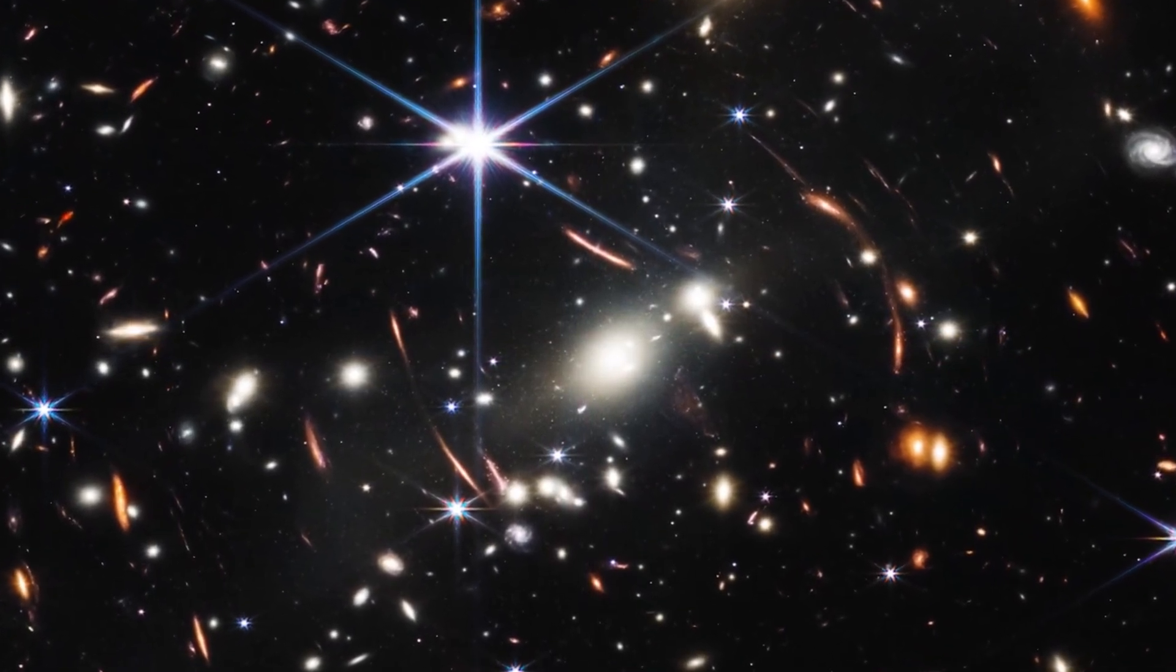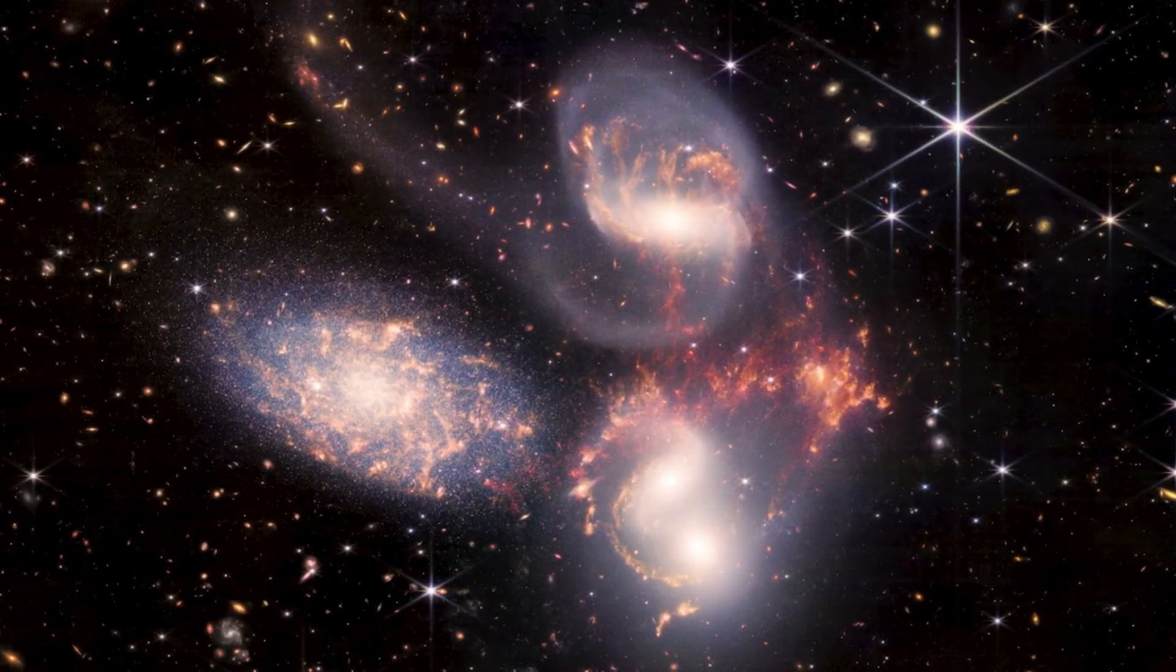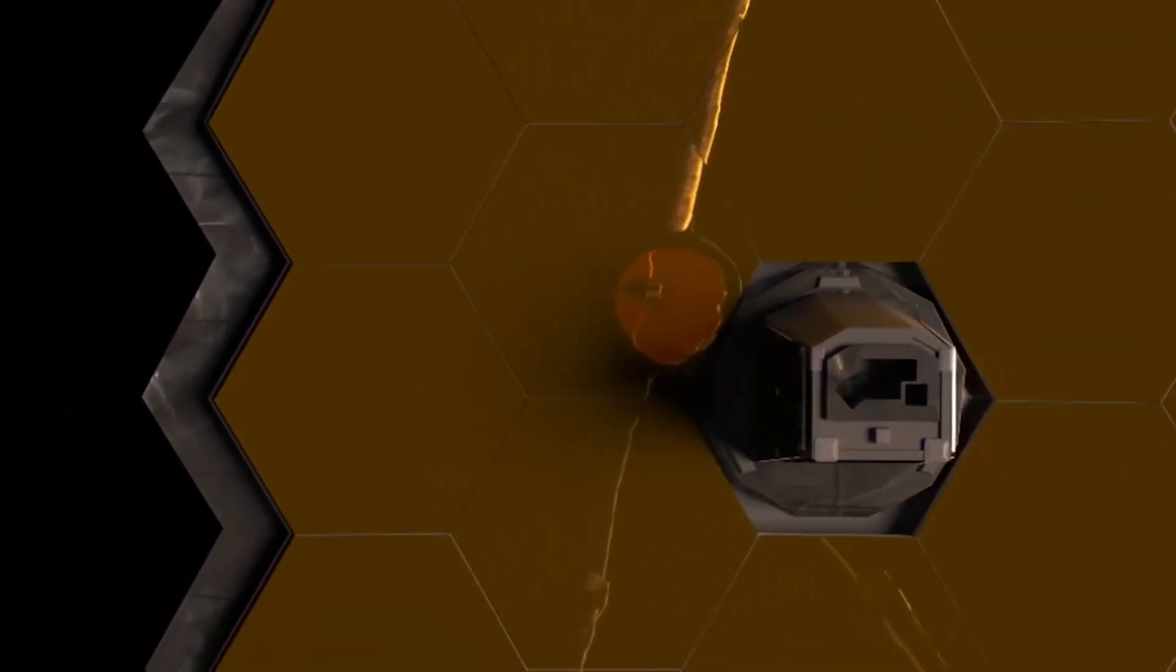However, the unexpected shape and complexity of these structures pose a significant challenge to understand. The James Webb Telescope sees the universe in infrared light, which is translated into visible light wavelengths.